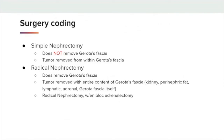In surgery coding, there are basically two differentials. A simple nephrectomy does not remove Gerota's fascia — the tumor is removed from within Gerota's fascia. In contrast, a radical nephrectomy does remove Gerota's fascia; the tumor is removed with the entire contents of Gerota's fascia, including the kidney, the perinephric fat, lymphatics, adrenal, and Gerota's fascia itself. Radical nephrectomy may also include an en bloc adrenalectomy.